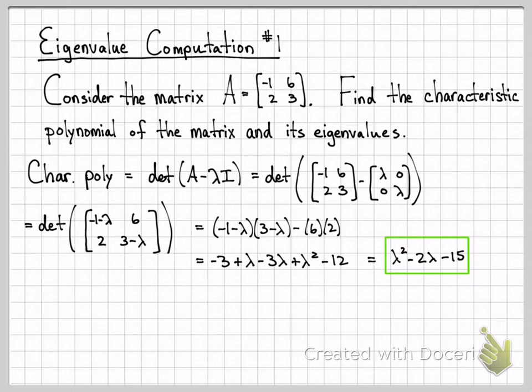Now we can find the eigenvalues. By definition, the eigenvalues of a matrix are the roots of the characteristic polynomial. So if we set the characteristic polynomial equal to zero, and find the lambda that satisfy this equation, that by definition is the eigenvalues of the matrix. So let's do that.